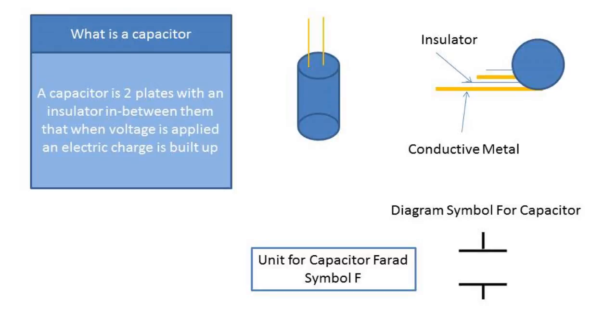What is a capacitor? A capacitor is two plates with an insulator in between them that when voltage is applied, an electric charge is built up.